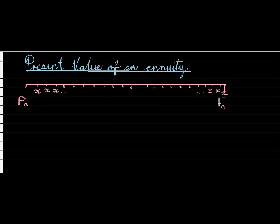Welcome back to another lesson on financial mathematics. We've had a thorough look at the future value of an annuity. Let's quickly revise what we mean by an annuity. An annuity is a sequence of recurring payments — either a fixed amount deposited monthly, yearly, or termly into an account. Any form of a fixed reoccurring investment.